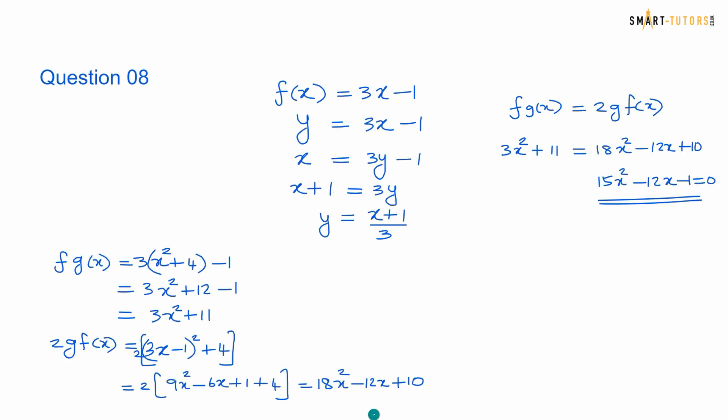Question number 8. The functions are given fx and gx. They are asking f inverse x. The way to do is fx equal 3x minus 1. Replace the fx with y equal 3x minus 1. Switch the y to x, x to y. So x equal 3y minus 1. Then change y as a subject. So y equal x plus 1 over 3. So f inverse of x is x plus 1 over 3.